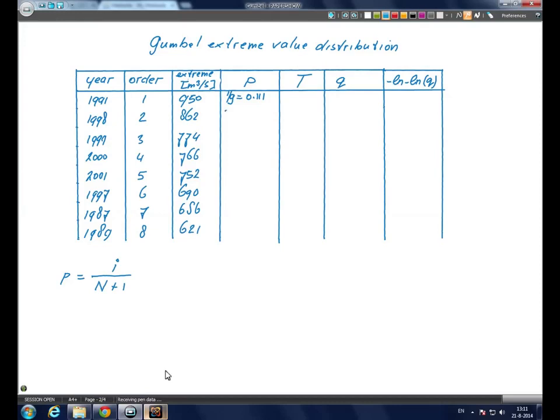And the second year, 2 over 9, which is 0.222. The third year, the fourth year, the fifth year, etc.